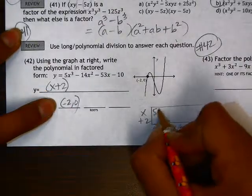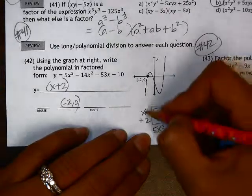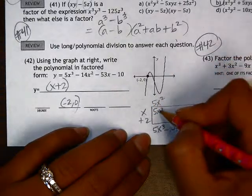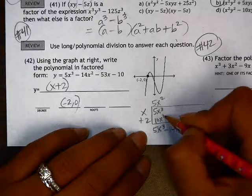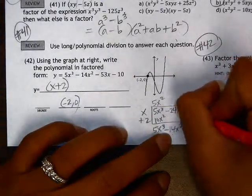So this is going to go here, and we're going to work backwards to figure out the rest. x times 5x squared gives me this. Multiplying these gives me 10x squared. I want a negative 14x squared, so this should be negative 24.